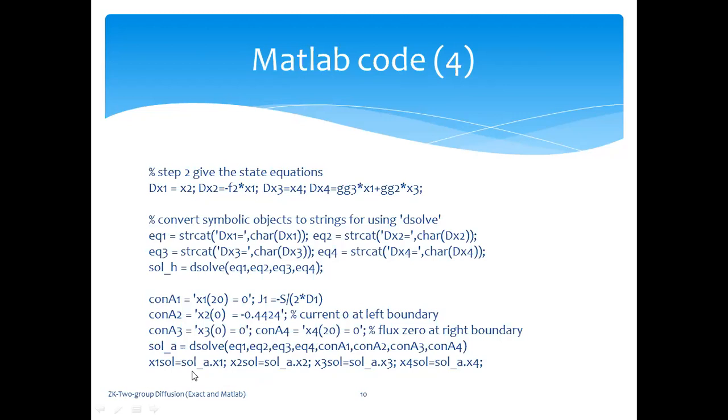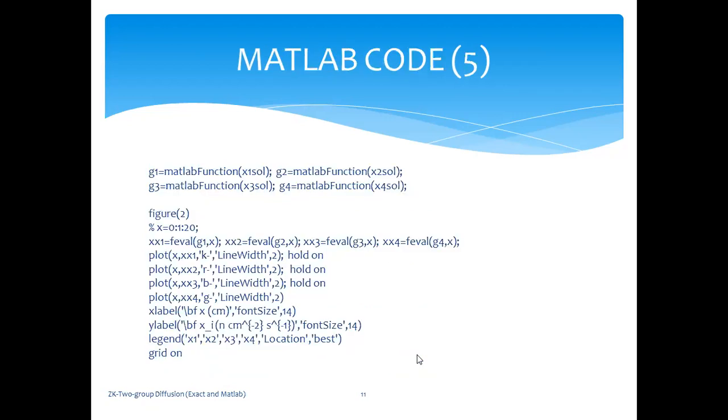Now, how do you retrieve the four state variables? You dot it with the solution that you've obtained over here. So you get x1 from the solution by saying sol_a.x1. Similarly, you do for the other three. Now, to plot in MATLAB, you need to convert the x1_sol, x2_sol, x3_sol, and x4_sol into a MATLAB function, which you need this command, the matlabFunction command in MATLAB. And once you've done that, then you evaluate these four functions using feval, and you plot the functions with label and legends.